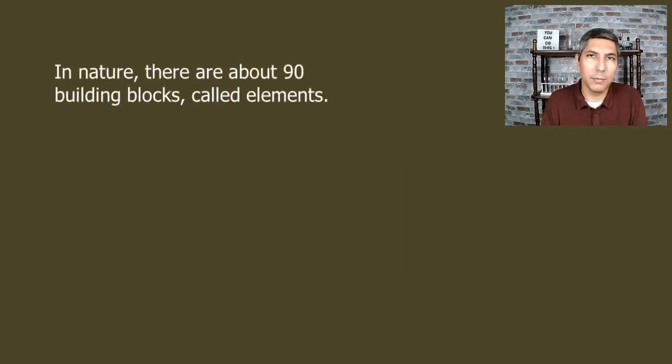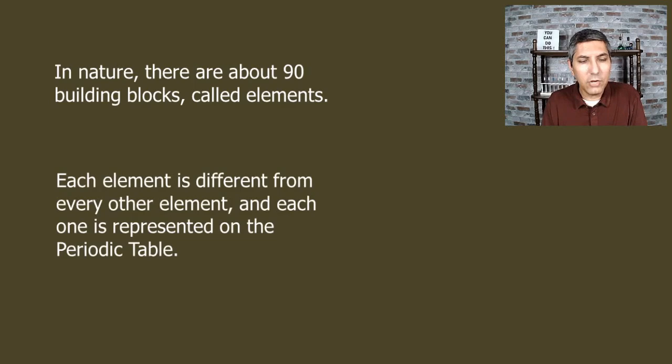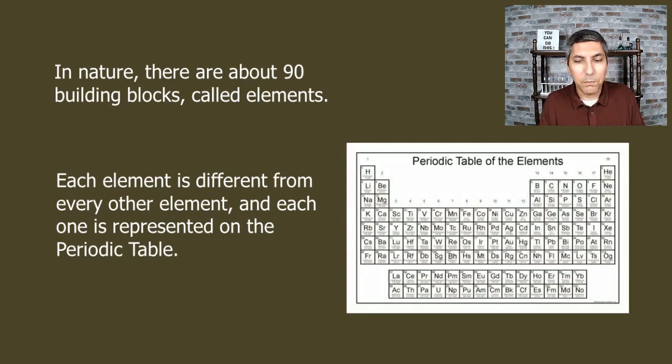Now as we talk about the elements in the natural world, there are 90 naturally occurring elements. Each element is different from every other element that's out there, and every one of them is found on the periodic table. So we have the periodic table of the elements that perhaps you've seen before, and we'll talk about more in this course very soon as well. I said there are 90 building blocks or elements found in nature, and as you look at the periodic table you might notice that there are more than 90. There are actually 118 on the periodic table as of the time of this recording, and you might wonder, well what's the difference? Is that a mistake? Well no, that's not a mistake.